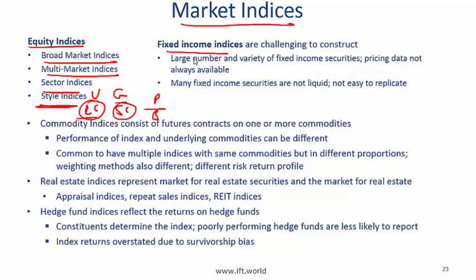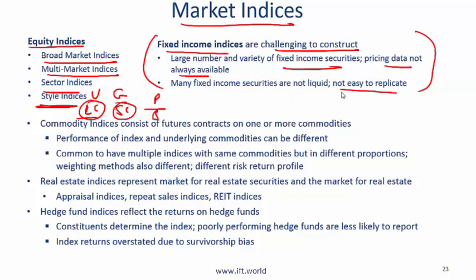Fixed income indices are challenging to construct because there are a large number and variety of fixed income securities. Pricing data is not always available since fixed income securities are not always liquid. They are also difficult to replicate: with a stock-based index you can create a fund using those stocks, but if the constituent fixed income securities are hard to purchase, the index cannot easily be replicated.